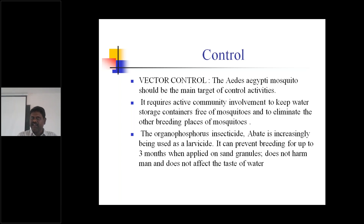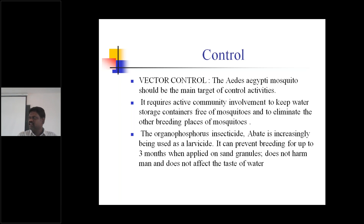Organophosphorus insecticide Abate is most commonly used for the control of this vector. Vector control is the main strategy to follow for Chikungunya fever — control the mosquito, which is the main target of control activities.